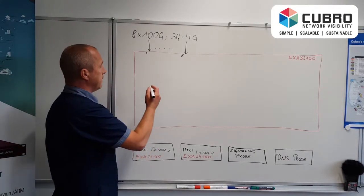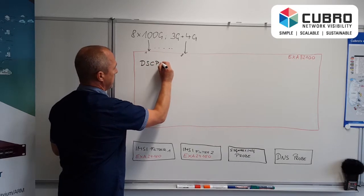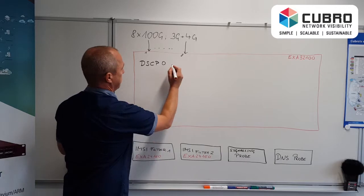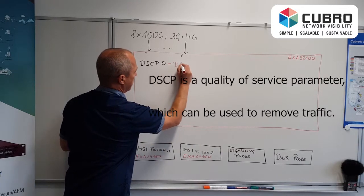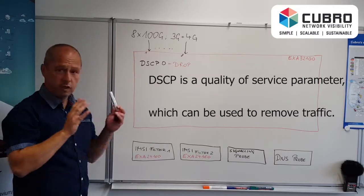And the first filter we need is we have a filter called DSCP value 0 and this traffic we are dropping. Okay, so this is the first thing.